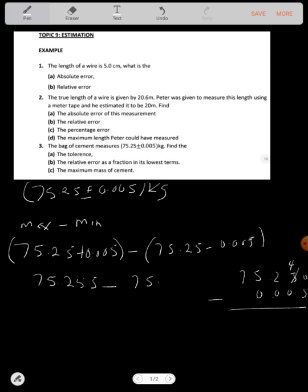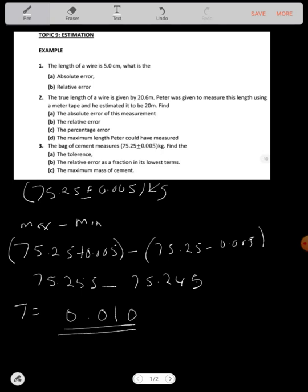So there's a 0 here. You borrow 1 there, there's 4 there. So you have 5 here, then you have 4, then you have 2. So what you have here is 75.245. Then the difference between these two is going to give us the tolerance. 5 minus 5, you get 0. 5 minus 4, you get 1. 2 minus 2, you get 0. Then whatever is inside is just 0. So your tolerance is 0.010.